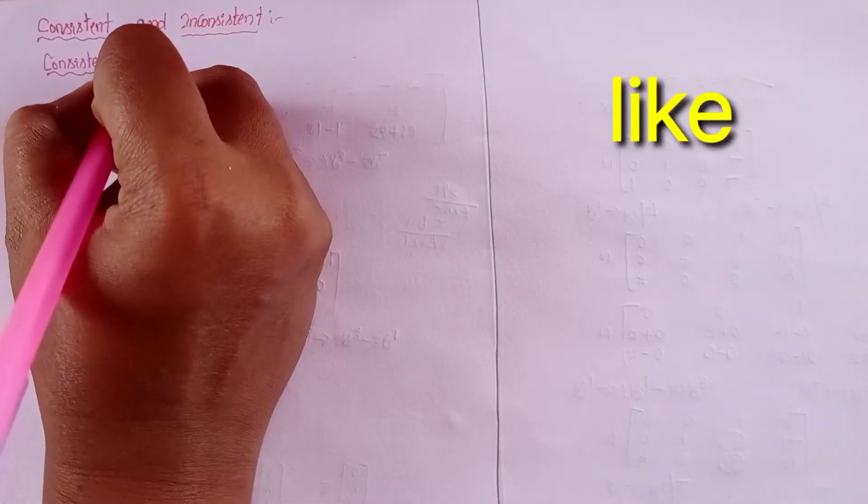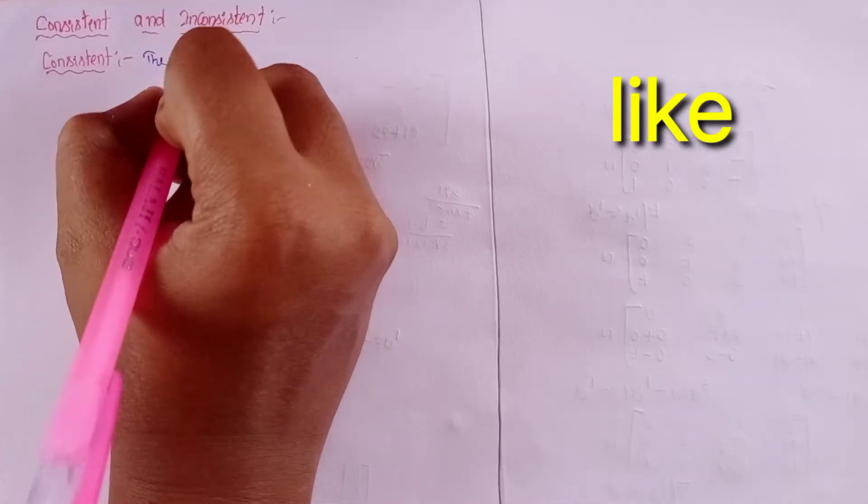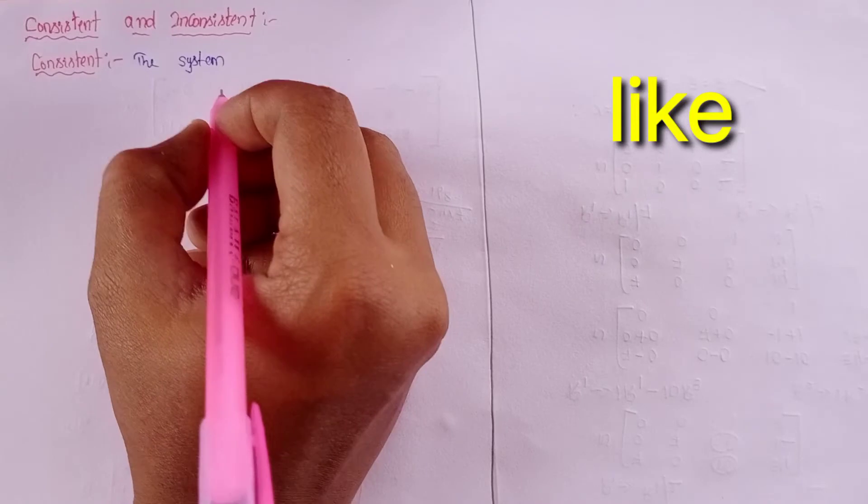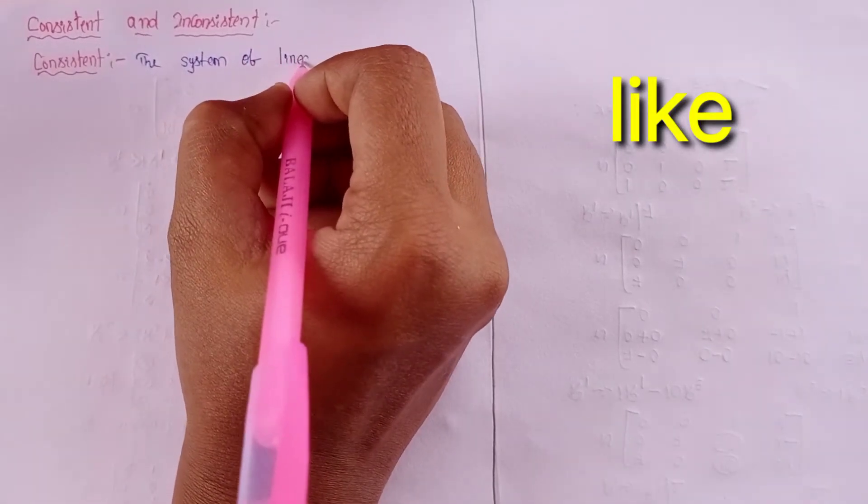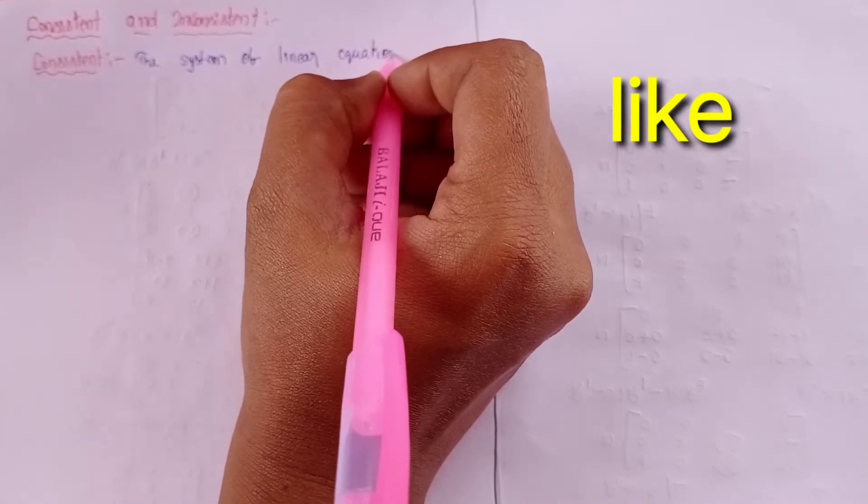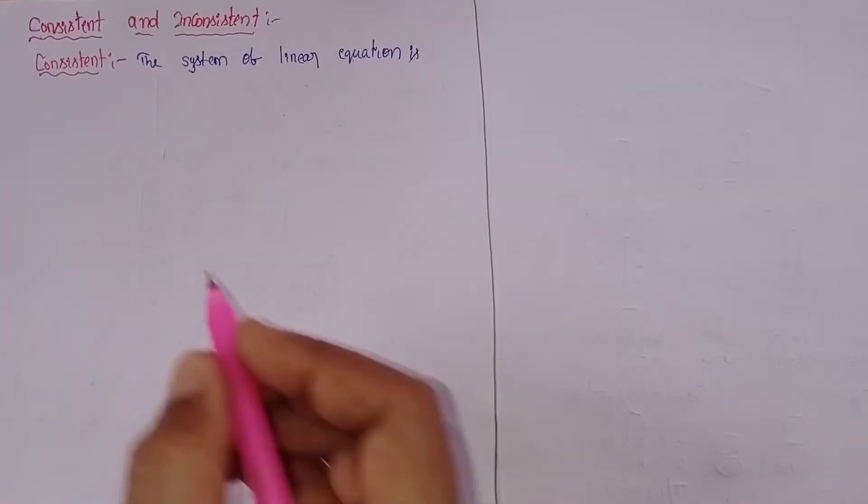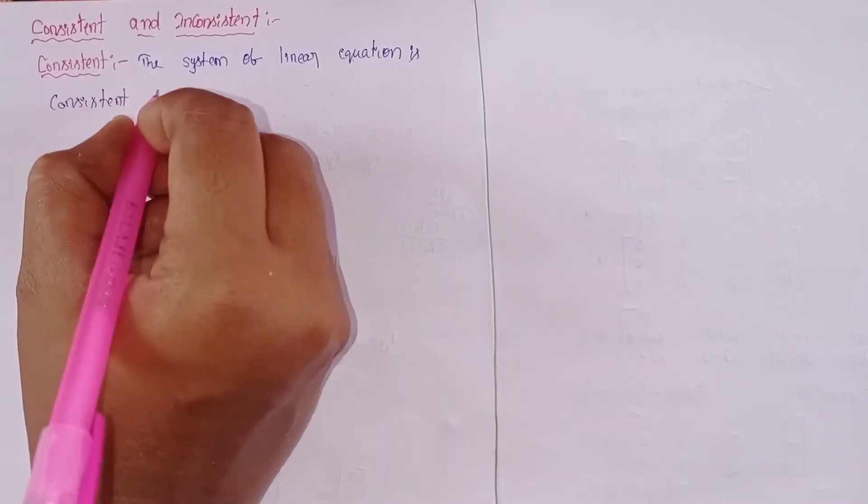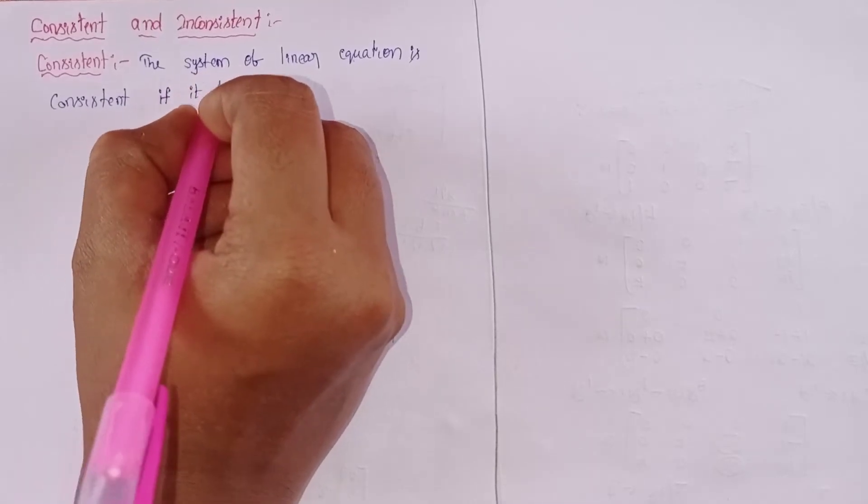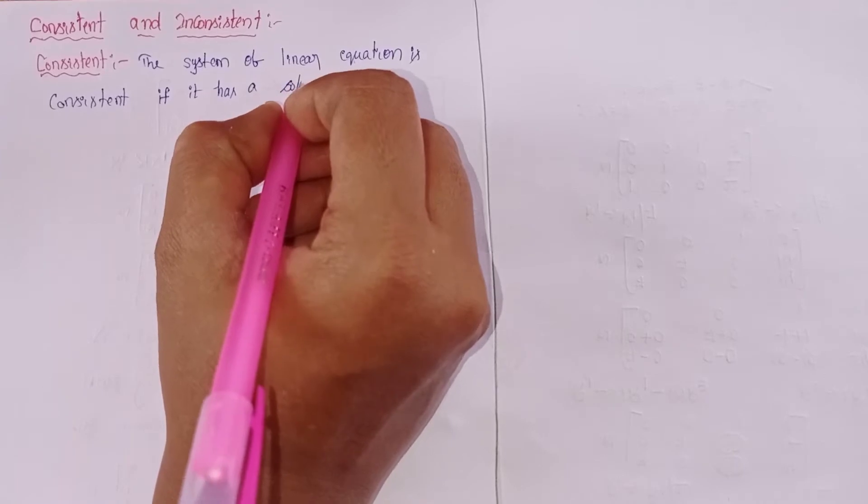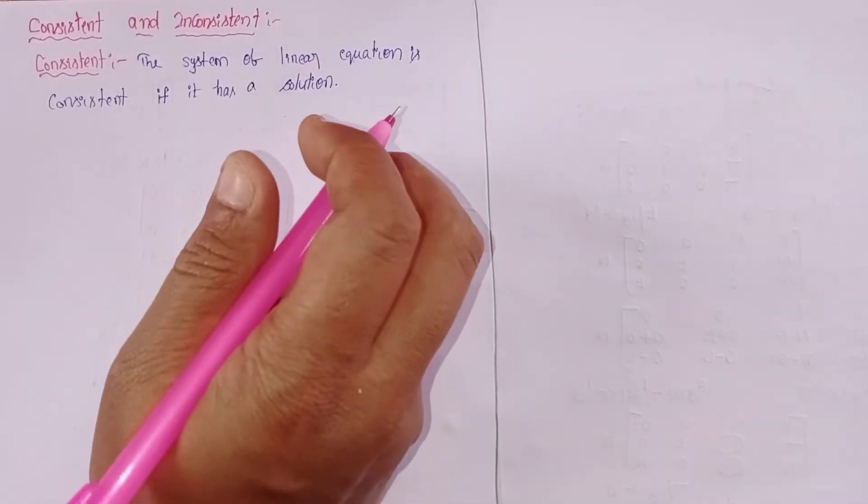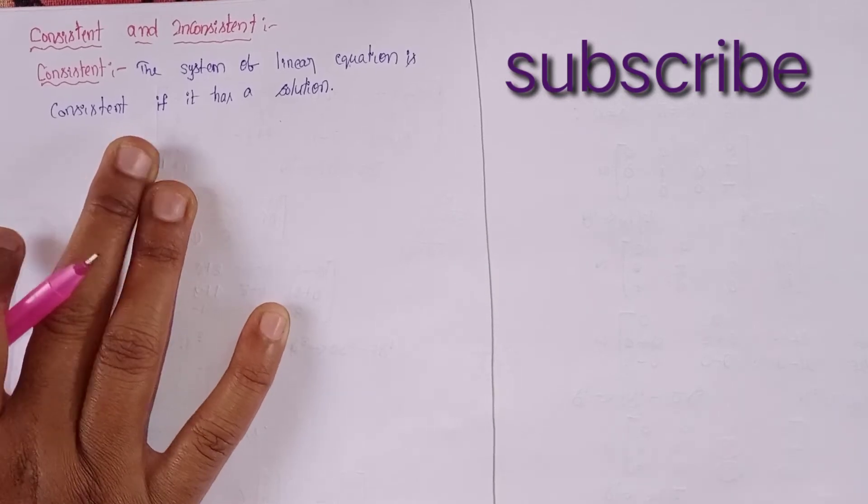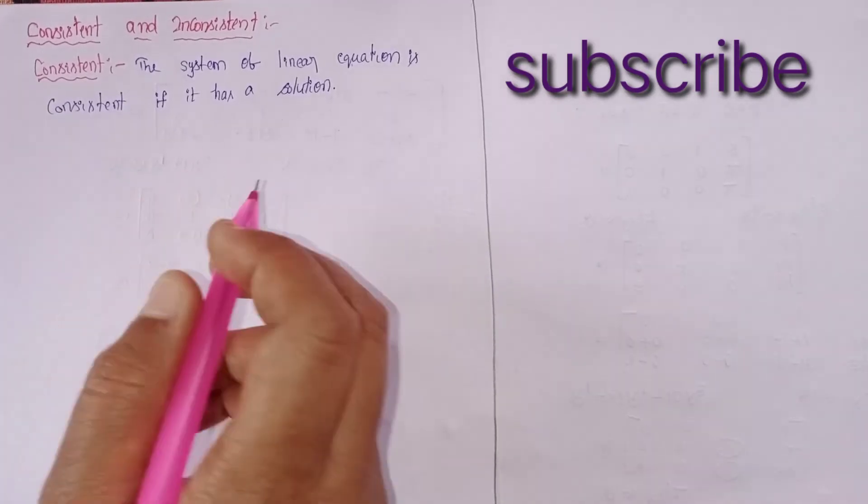What is consistent? The consistent: the system of linear equation is consistent if it has a solution. The system of linear equation is consistent if it has a solution. If the given equation has a solution, it is called consistent.